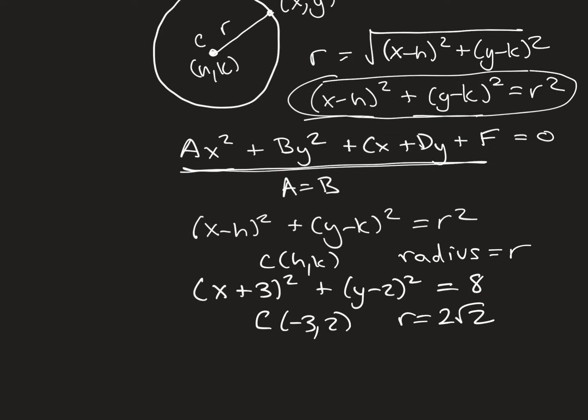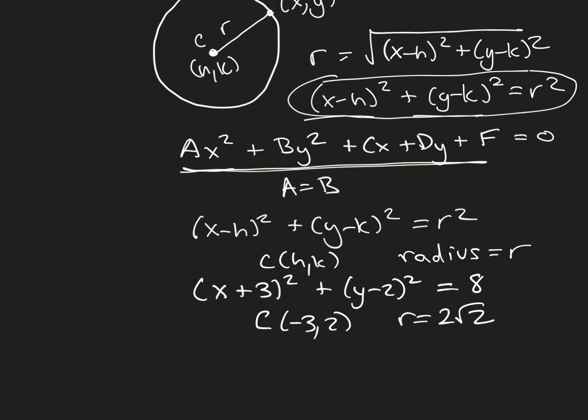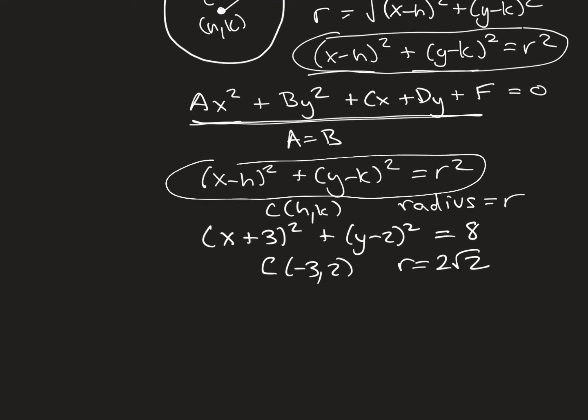Now, when you complete the square, even if the coefficient of x² and the coefficient of y² are the same, you could end up, after you complete the square, with the right side being 0. Say we get down to this form. If we end up with r² being positive, we've got a circle. If r² is 0, we have a point, because the distance from the center to any point on the circle is 0, so it's going nowhere, so we just have the point (h,k). And if r² is negative, we have no graph.